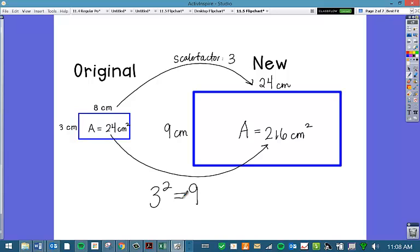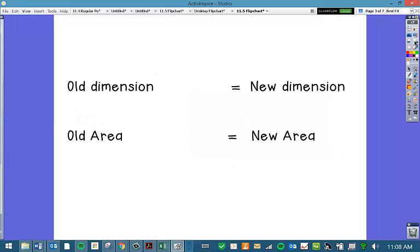So the moral of the story is if you are taking your old dimension, and a dimension is like a length, a width, a height, a radius, a base, those are all dimensions. If you take your old dimension and multiply it by a scale factor, you call it SF or scale factor, to get your new dimension, you're going to take your old area and multiply it by the scale factor squared to get your new area.